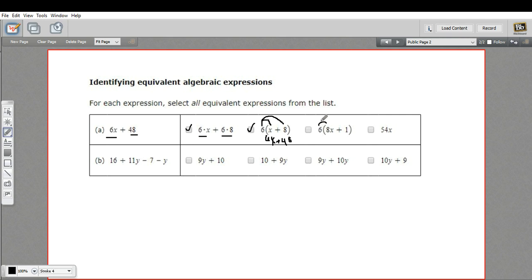On this one, I could distribute the 6, and the first thing I get is 6 times 8x. Well, that would be 48x. And 6 times 1 would be plus 6. That is definitely not the same thing. 48x is very different from 6x.